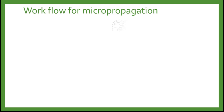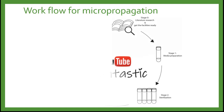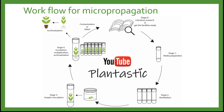Here is the workflow for micropropagation. We can see that we need to start with literature research and get the facilities ready. Step 1: we will have media preparation, followed by sterilization, aseptic inoculation, incubation, multiplication, and acclimatization. If the experiment is successful, it will go through acclimatization. However, if it fails or becomes contaminated, we will restart back to the literature research.